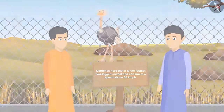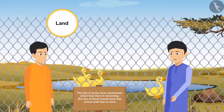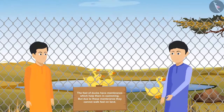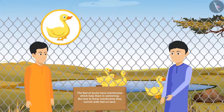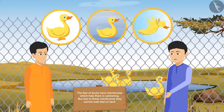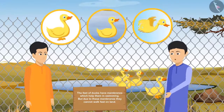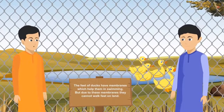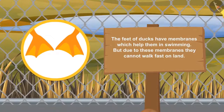Moving on, they admired some ducks and noted that ducks can move on land, in water, and in the sky — they can walk, swim, fly, and even dive underwater, making them like the superheroes of birds. They read that the webbed claws of ducks have membranes that help them swim, but because of those membranes, they cannot walk fast on land.